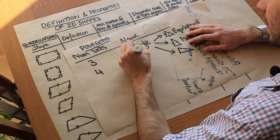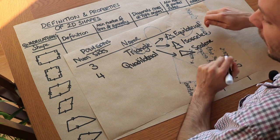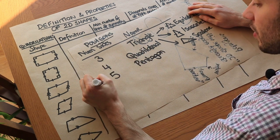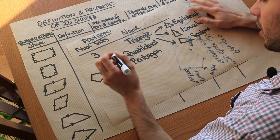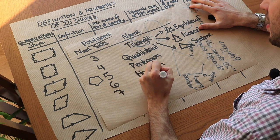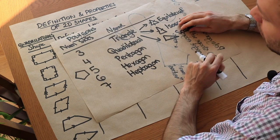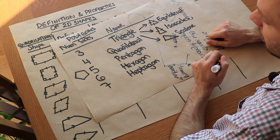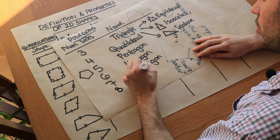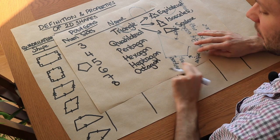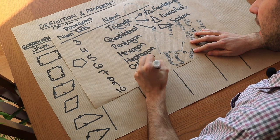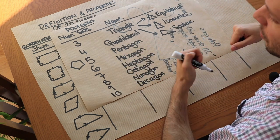Quad means four — for example, a quad bike is a four-wheeled bike. Five sides is a pentagon, six sides is a hexagon, seven sides is a heptagon. You may have heard of the heptathlon in the Olympics, which consists of seven events, just like a pentathlon consists of five events. Eight sides is an octagon — an octopus has eight legs. Nine sides is a nonagon, and ten sides is a decagon.